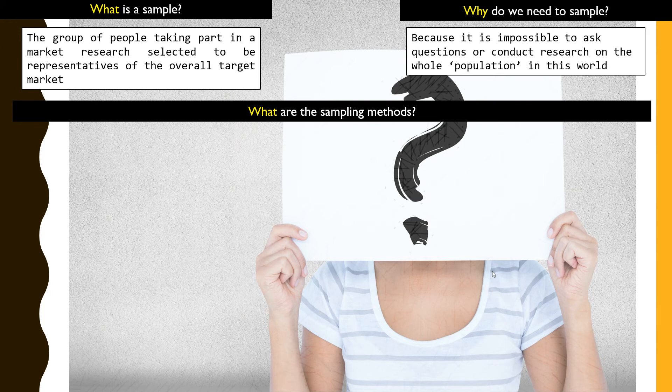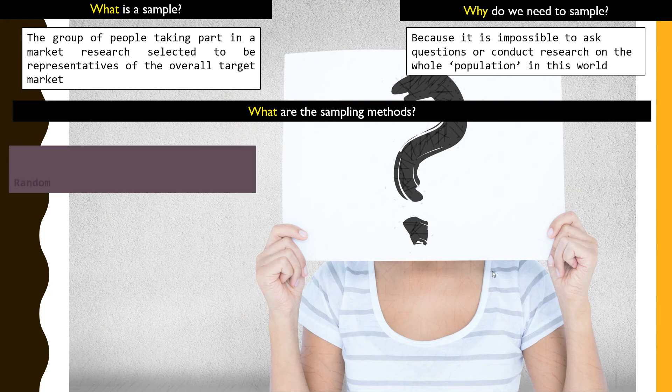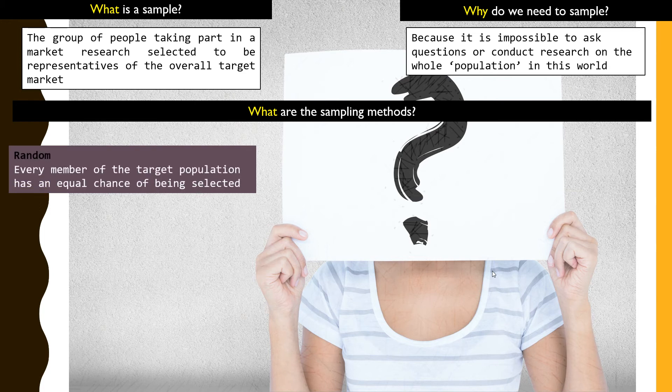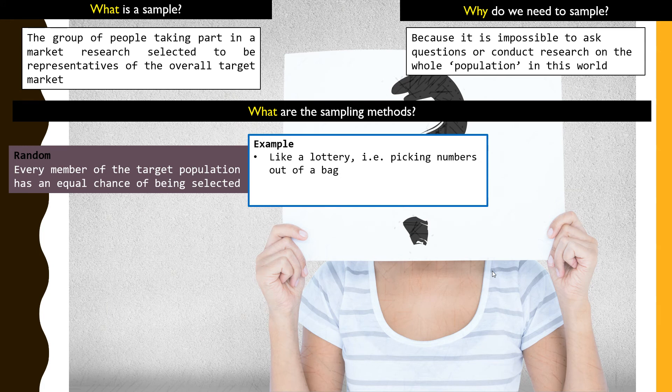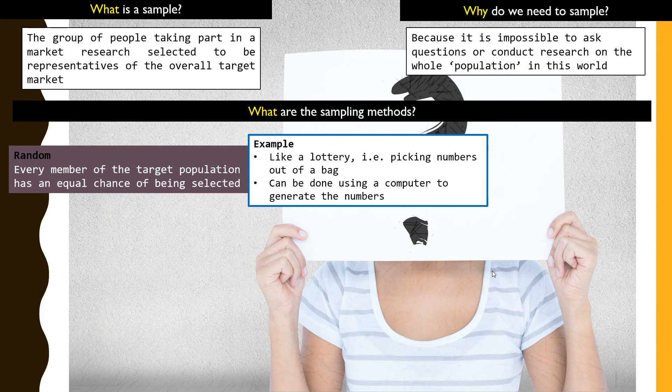The first method we will look at is random sampling. Basically, every member has an equal chance of being selected. Imagine if you're taking part in a lucky draw competition where everyone subscribes to it and based on picking numbers out of a bag, it's very random. Similarly in market research, this system is used where all information is gathered and you can use a computer to generate random numbers from the system where you will have different people partaking in particular market research.